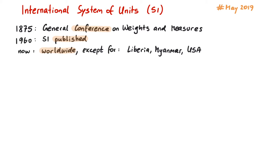Originally, the definitions for meter, second, kilogram, and so on were based on phenomena of our daily lives. The second was defined as a fraction of a day, and the Kelvin was derived from the Celsius scale via the freezing and boiling points of water.